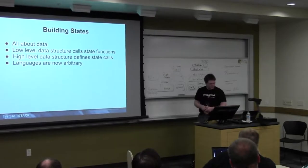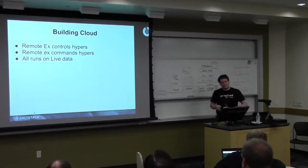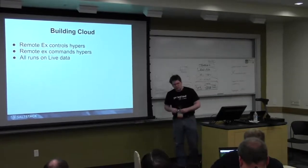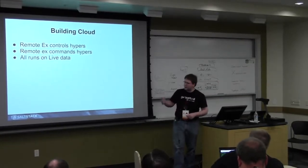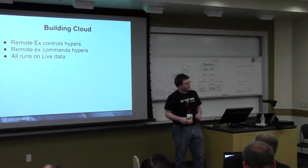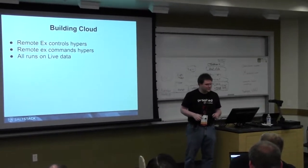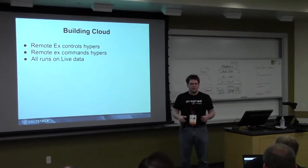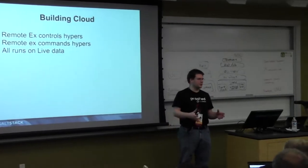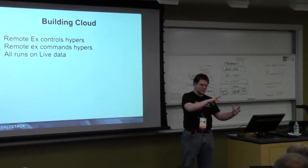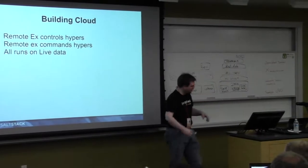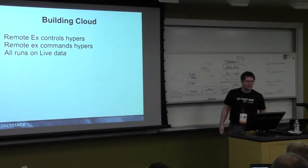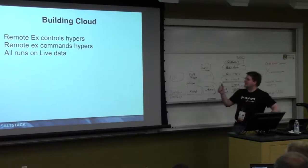Some of the new things in Salt and the direction where we're going — these things work, although I will admit they're a little on the young side. Salt comes with a completely armed and operational cloud controller. By 'armed and operational' I do mean the second Death Star — it's not quite done. This one's going to have a hole where a whole ship can fly in and destroy it, not just an exhaust port.